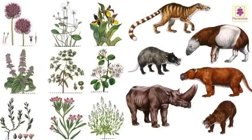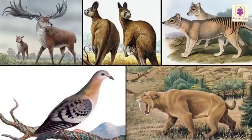It is true that no animal or plant species lives forever, but the pace at which they are disappearing now is a matter of concern. Extinction is a natural process, but in the past few years species are becoming extinct faster than normal.